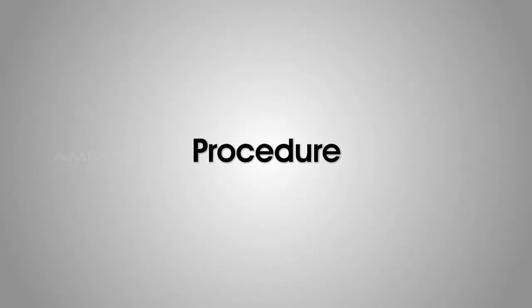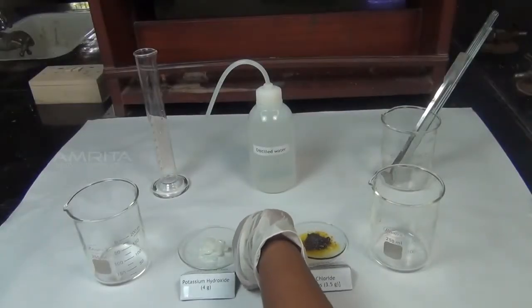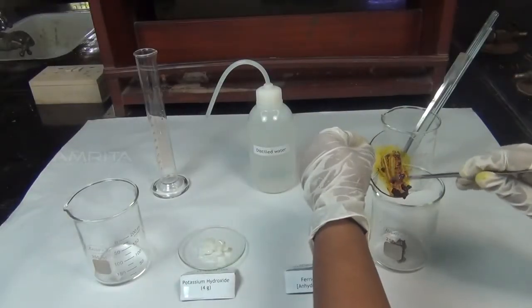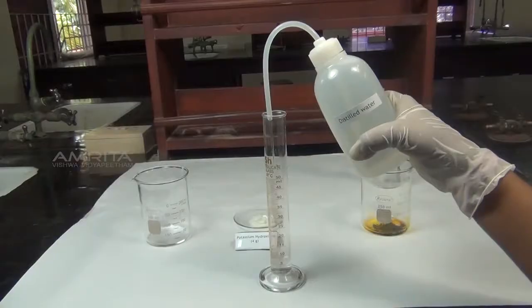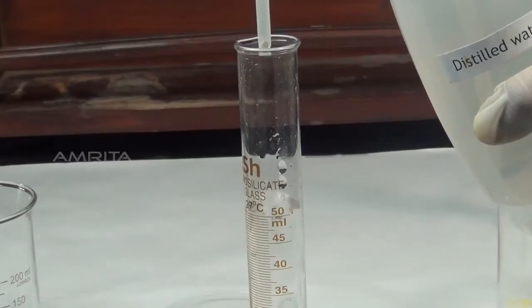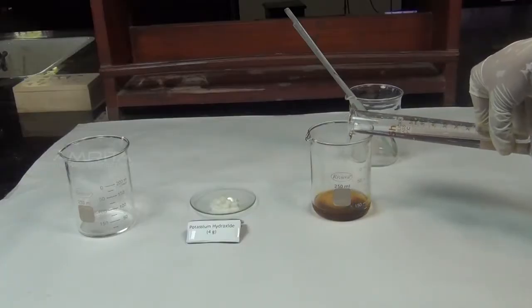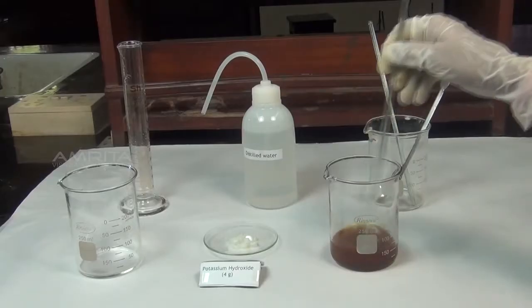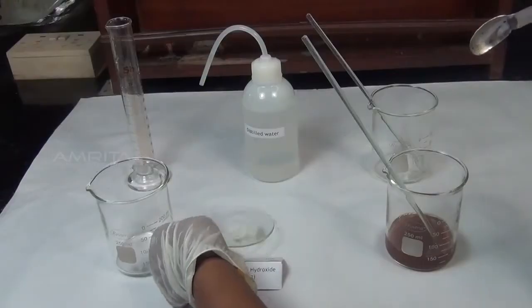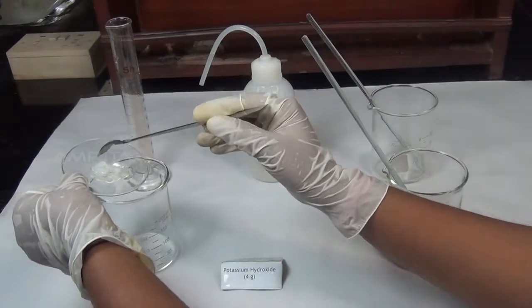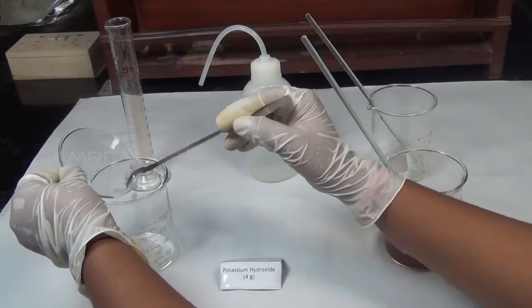Procedure: Take about 3.5 g anhydrous ferric chloride in a 250 ml beaker. To this add about 50 ml of distilled water using a measuring jar. Stir the solution using a glass rod to dissolve ferric hydroxide.